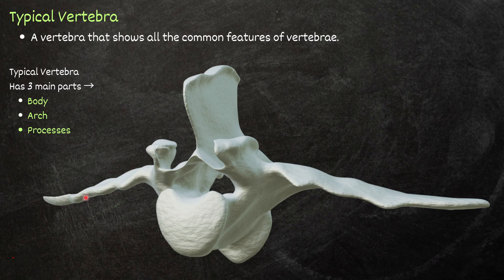We will discuss one by one. This part of the vertebra is the body, this part is called the arch or neural arch, and these parts are called different types of processes.